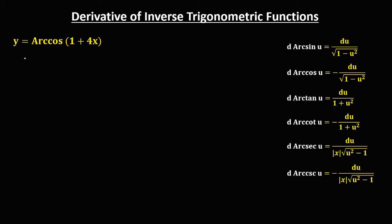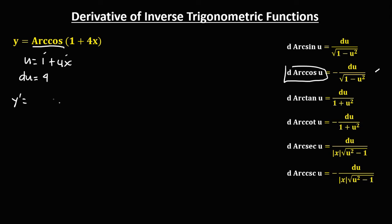For this given, u is equal to 1 plus 4x. The derivative of the constant is 0 and the derivative of 4x is 4, so du equals 4. For arccos(u), the formula is negative du over the square root of 1 minus u squared. So we have negative 4 over the square root of 1 minus (1 plus 4x) squared.